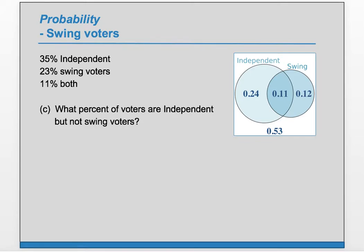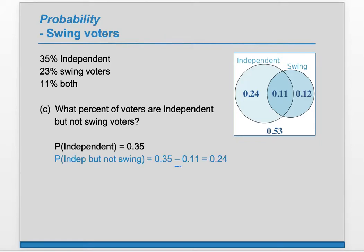Part C: what percent of voters are independent but not swing voters? Drawing the Venn diagram helps answer this question. The probability of independent is 0.35, and to find independent but not swing, we subtract the overlap: 0.35 minus 0.11 gives us 0.24. So 24% are independent but not swing.